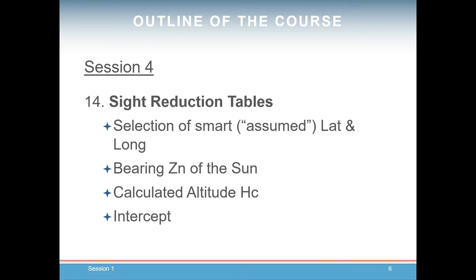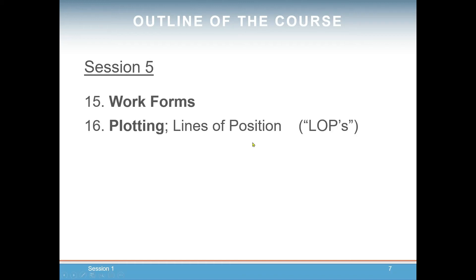Then we'll get into the sight reduction tables themselves and talk about selecting a smart or assumed latitude and longitude, pulling out of the sight reduction tables the bearing of the sun and the calculated altitude, and finally the intercept. We'll then talk about work forms, which help organize pulling all this data together so that you don't miss anything and eliminates a lot of mistakes.